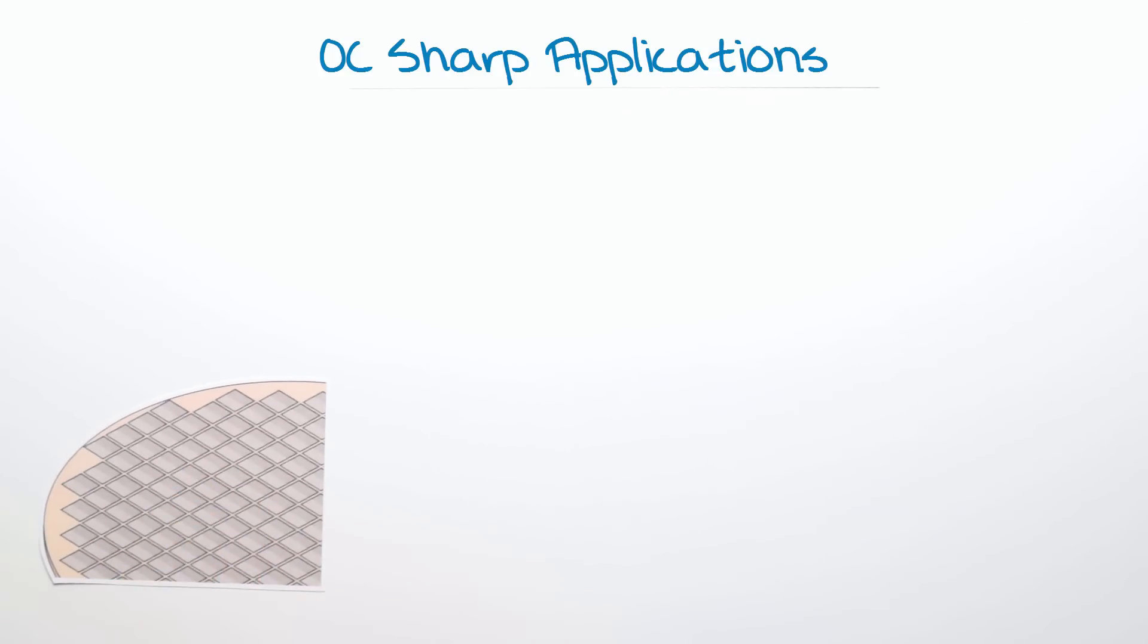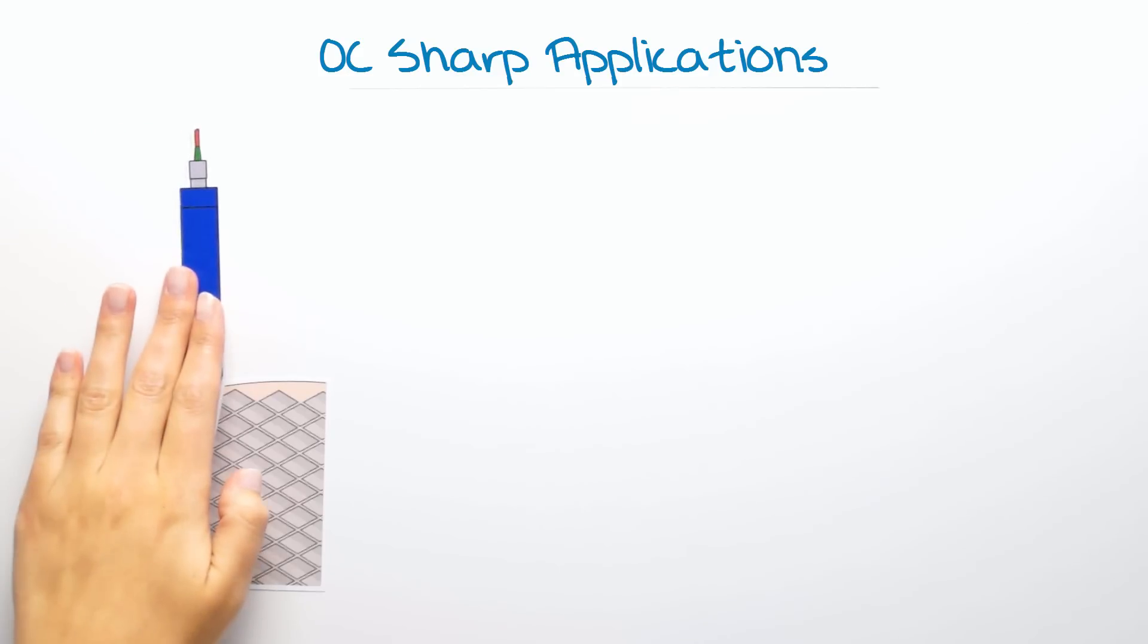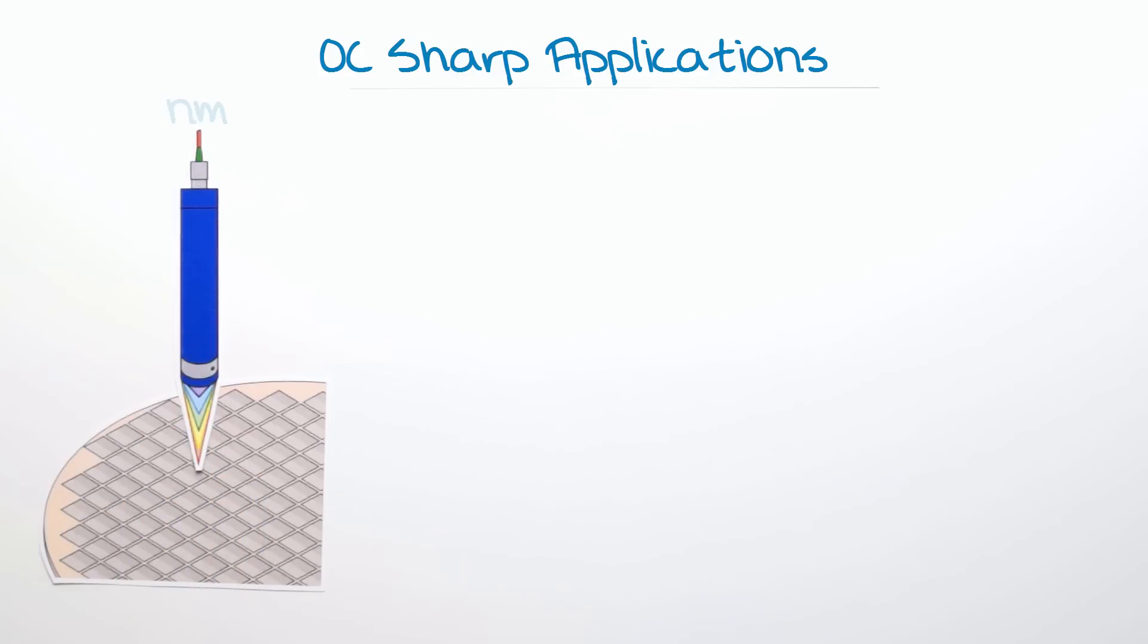In combination with the different sensor head options, this opens up a whole range of potential applications. Thus, the chromatic thickness measurement can be used in the electronic and solar industry to measure surface topographies for solar wafers with resolution down to a few nanometers.